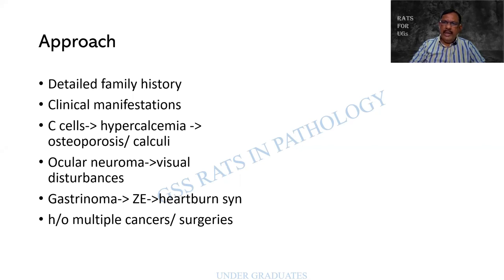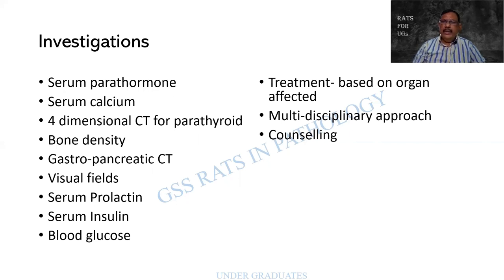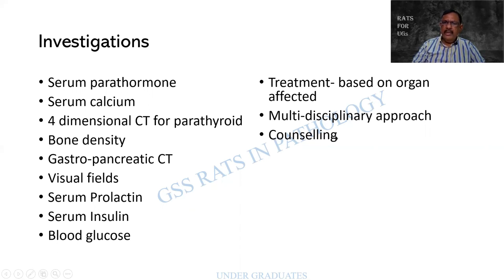If there is a neuroma in the eye, there will be visual disturbances. Gastrinoma can lead to heartburn or peptic ulcer. A history of multiple cancers or surgeries should raise suspicion. Investigations include parathormone, serum calcium, prolactin, insulin, blood glucose, bone density scan, CT scans for multiple tumors, and visual field assessment. Treatment is generally organ-based but requires a multidisciplinary approach, and family counseling may be mandatory.